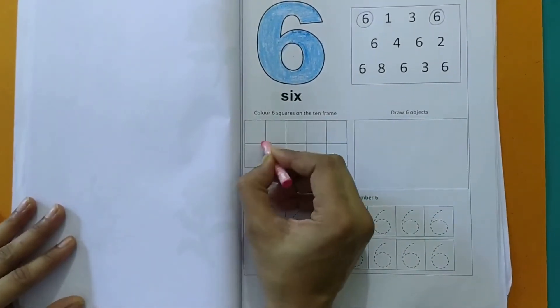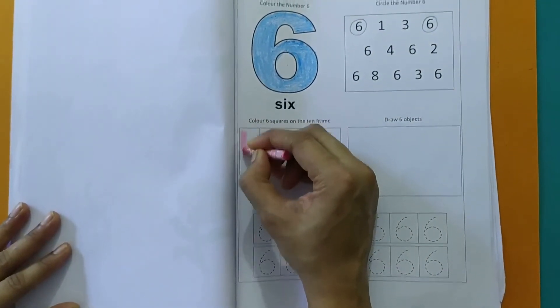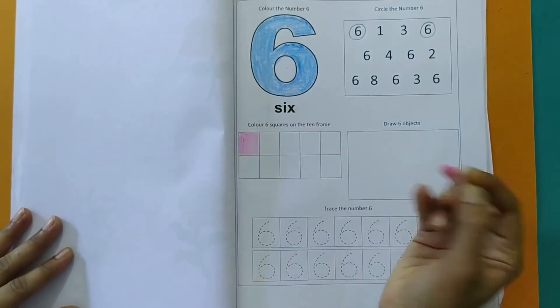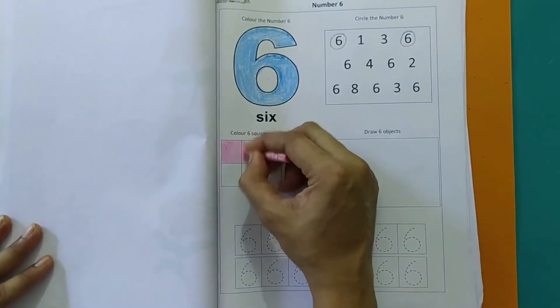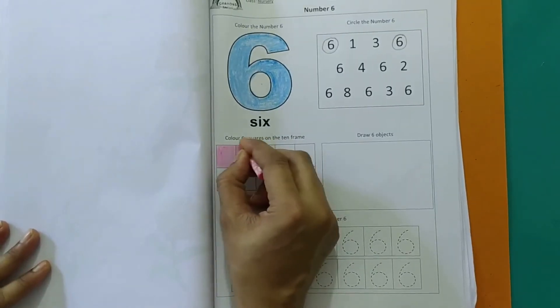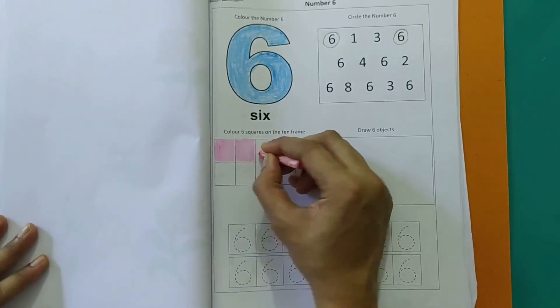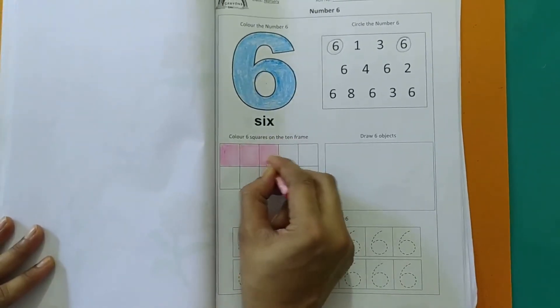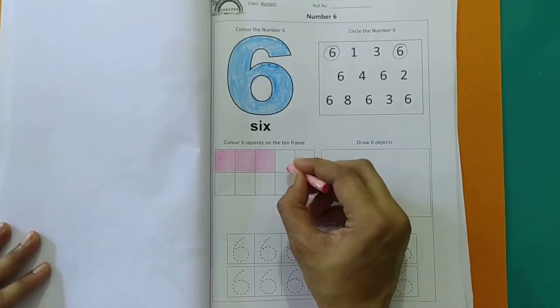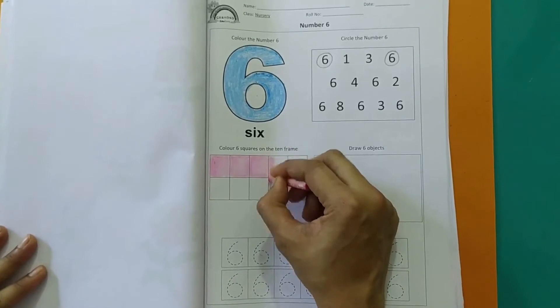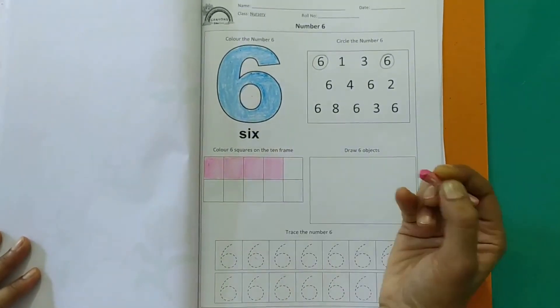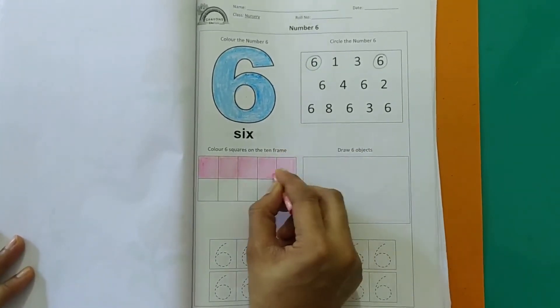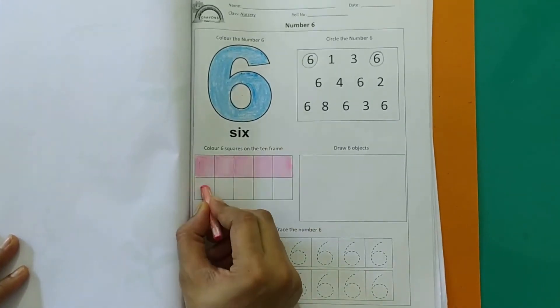Let's count. I'm coloring the first square. This is number 1. 1, 2. The second box, the second square. Number 2. Now number 3. 3. Colored the third square. The number 3. Now 4. 4. Next 5. 5, 6.